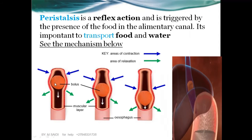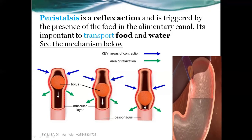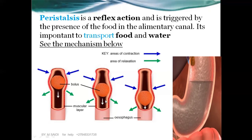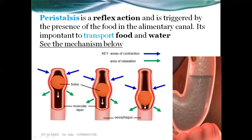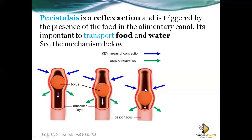Food in the form of a ball is called a bolus. The muscles work antagonistically — when these ones contract, the other ones relax — and the food is pushed downwards and continues in that direction.